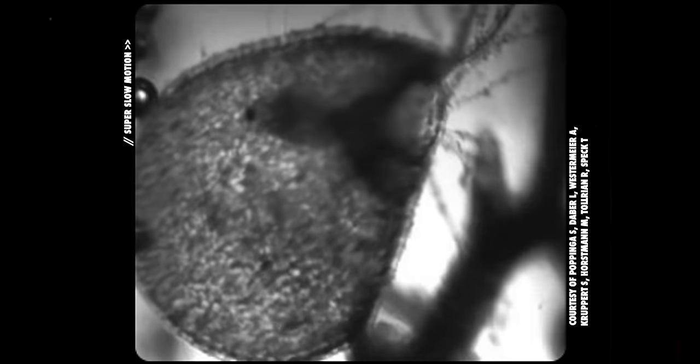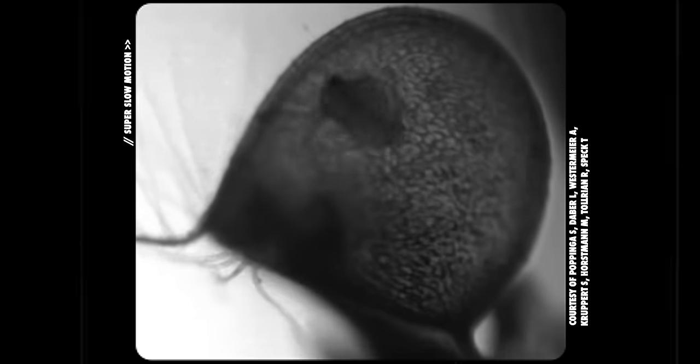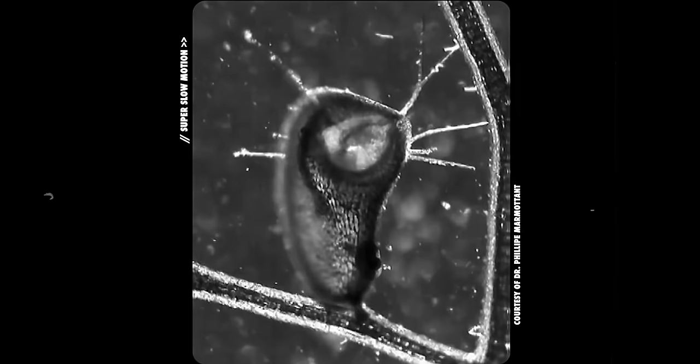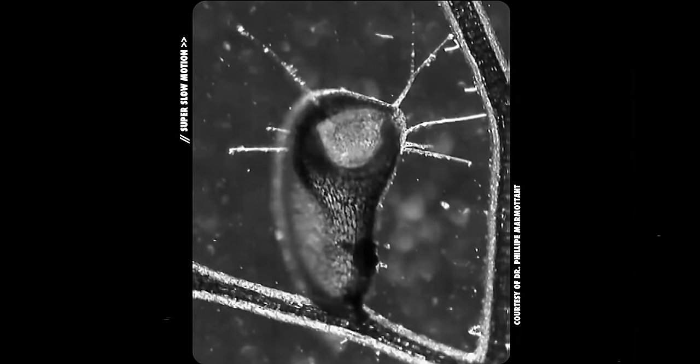The expression hair trigger is an apt description of the mechanism behind the bladderwort's impressive ability to capture its prey. Tiny hairs on each bladder trigger it to spring open so quickly that a vacuum-like force sucks in whatever set off the trap. The door then slams shut, sealing the delicious snack inside.